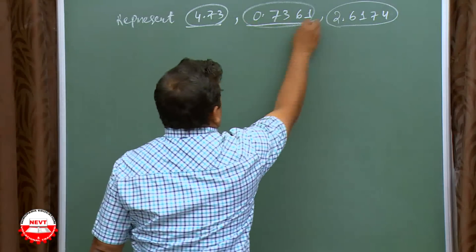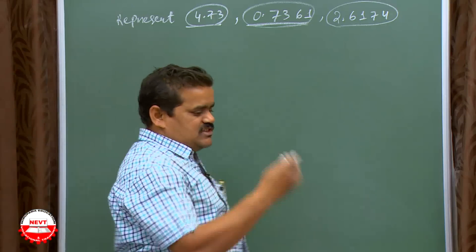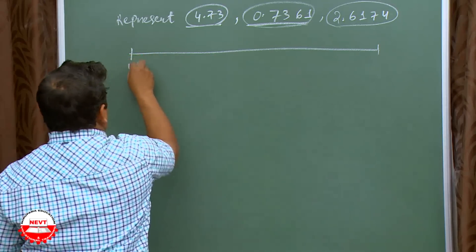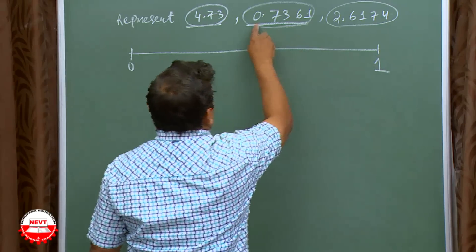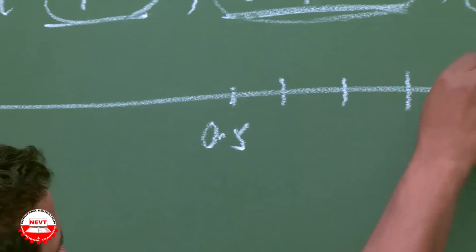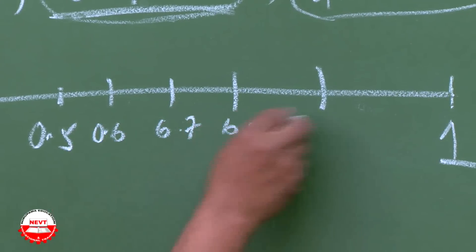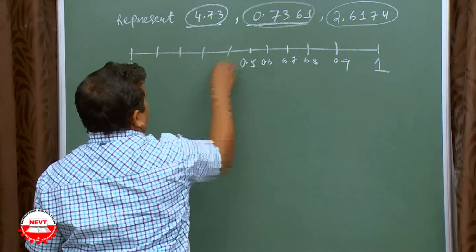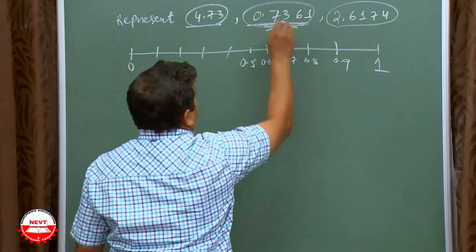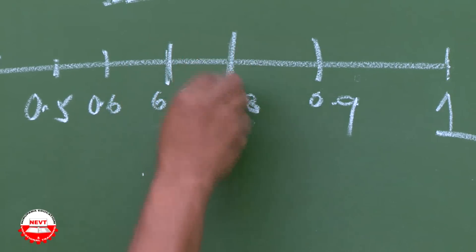Now come to the second part: 0.73461. It lies between 0 and 1, so draw a number line. This is 0, this is 1. Your aim is to get 0.7 — the middle part is 0.5. Divide into parts: 0.6, 0.7, 0.8, 0.9. Now you have to magnify the part between 0.7 and 0.8.